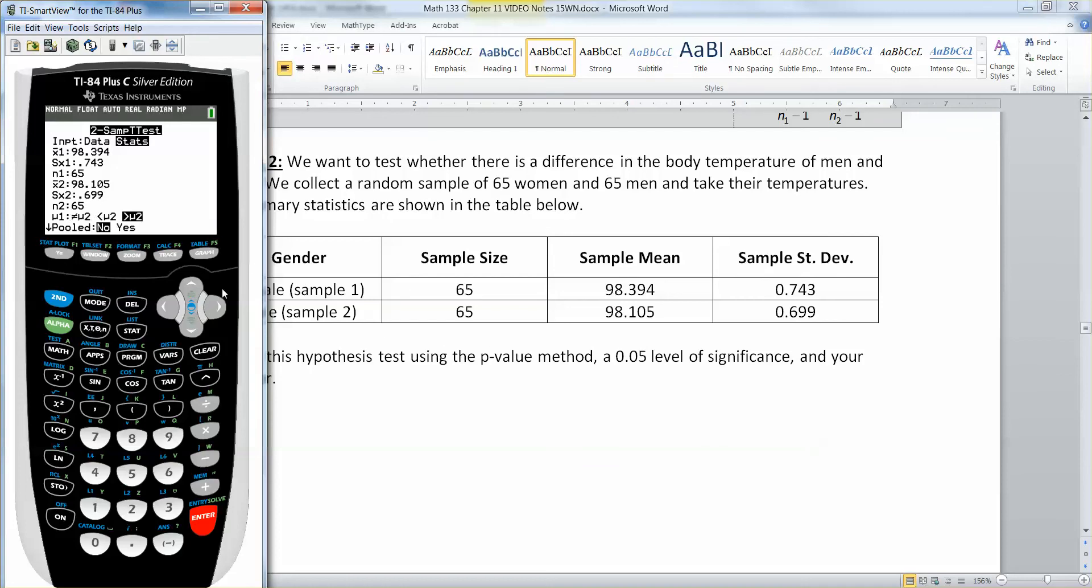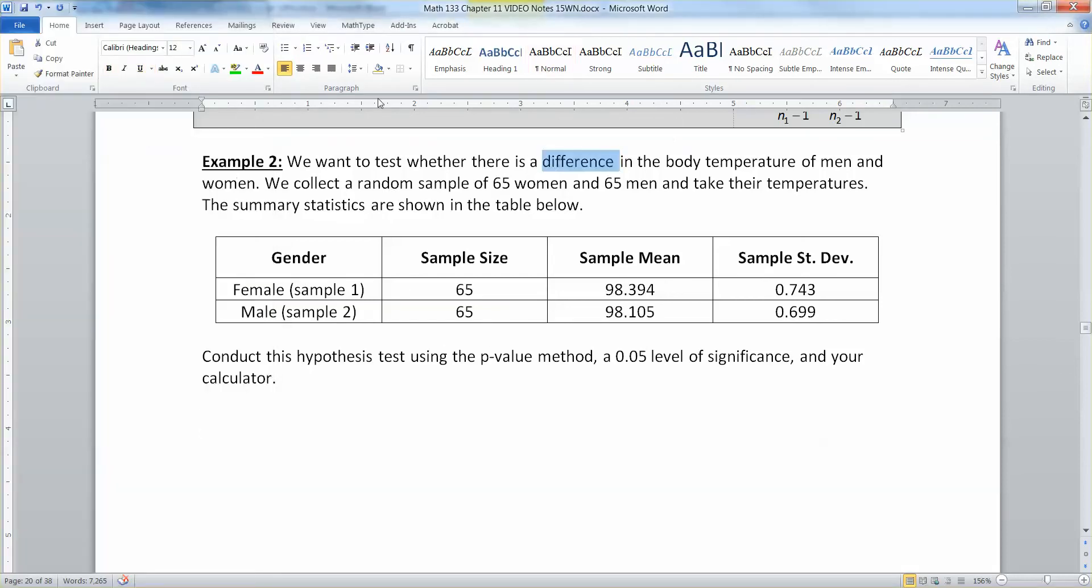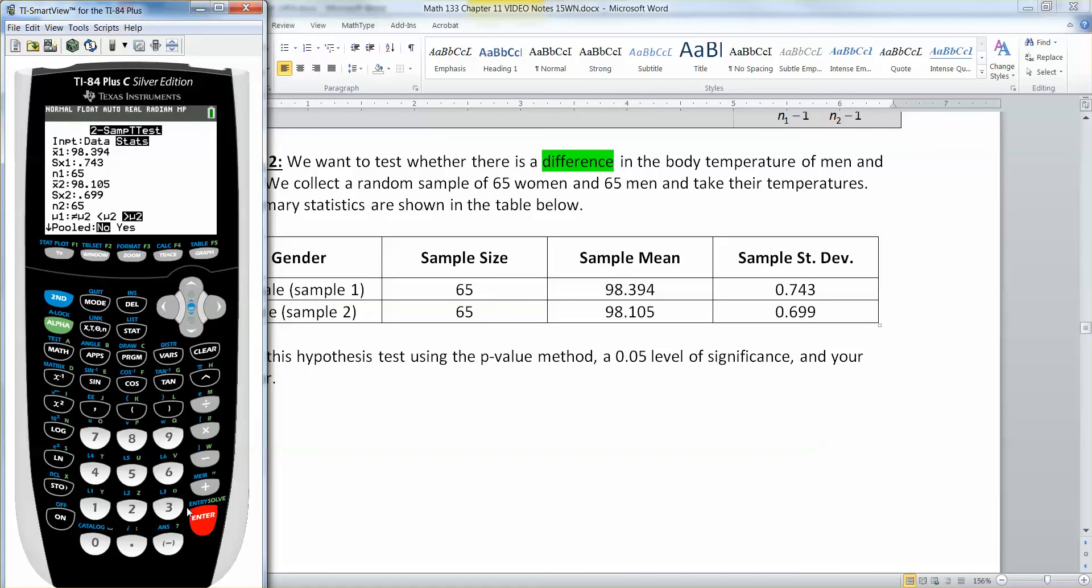Now we're going to have to figure out which one we're doing here. We want to know whether there is a difference. See that word? Difference. We're not saying men are hotter than women or vice versa. We're just saying they're different. That would be a not equal to test right down here. Always leave pooled as no for our course. Never, never, never change that. Just leave it pooled no. You have to do a whole other test to prove whether or not you can use yes. So unless you want to do two hypothesis tests in one, you better just leave it as no. And go down to calculate.